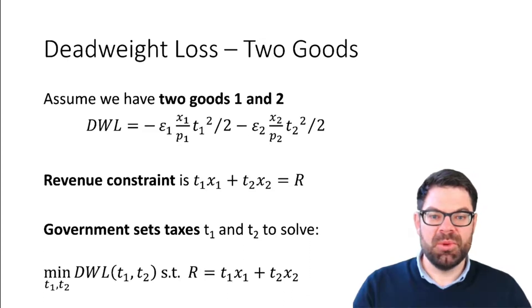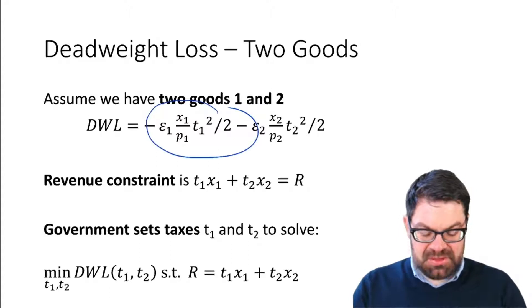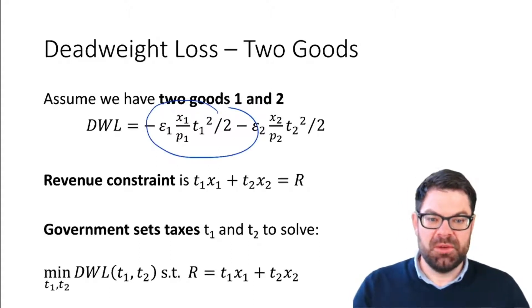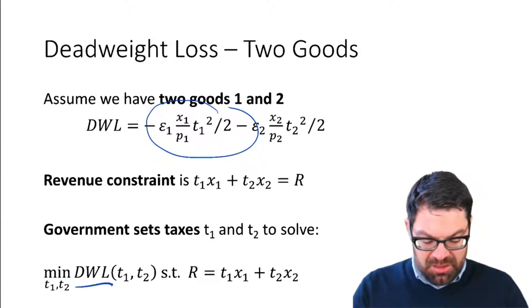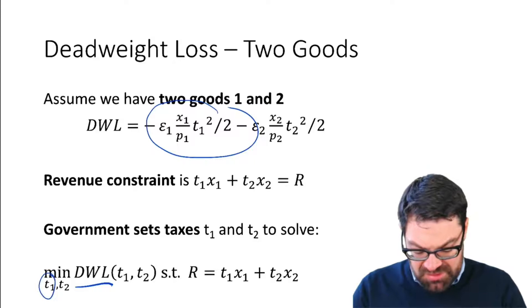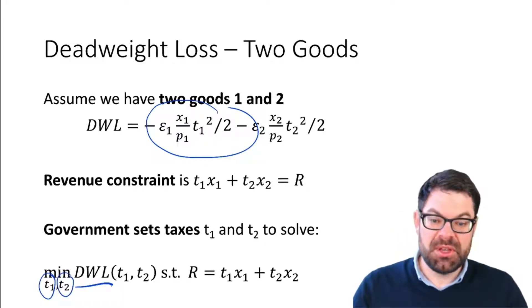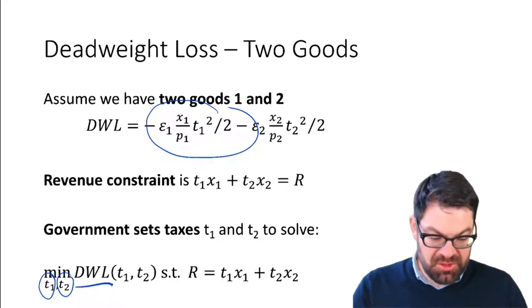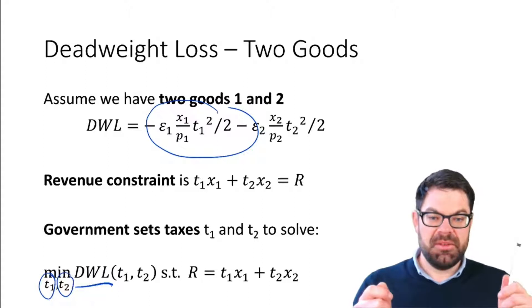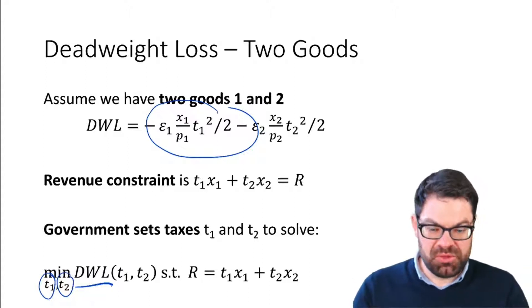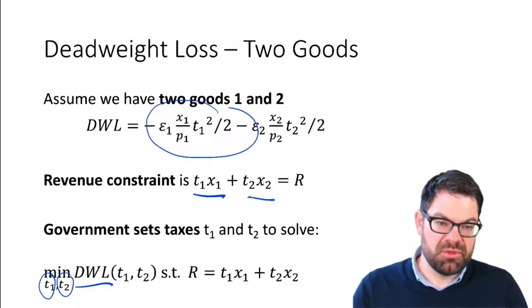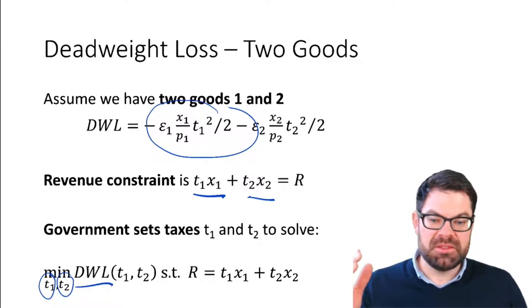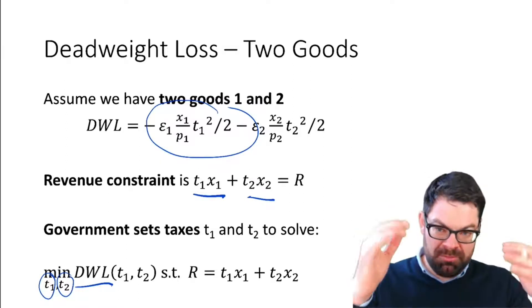If you wonder what the deadweight loss is and how we derived this formula, you have to look at the previous video. Here, what we're doing is setting up a minimization problem: we minimize the deadweight loss over the choice of two taxes — two goods — subject to a revenue constraint. The government levies taxes on good one and good two, and the sum of the tax revenues is the total revenue.